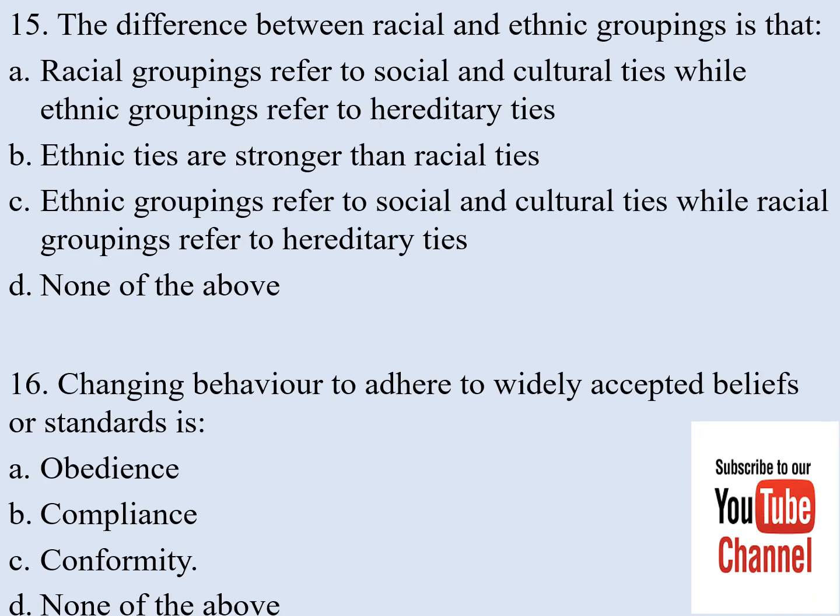Number fifteen. The difference between racial and ethnic groupings is that: a) racial groupings refer to social and cultural ties, where racial groupings refer to hereditary ties, b) ethnic ties are stronger than racial groupings, c) ethnic groupings refer to social and cultural ties, where racial groupings refer to hereditary ties, d) none of the above. The correct answer is c.